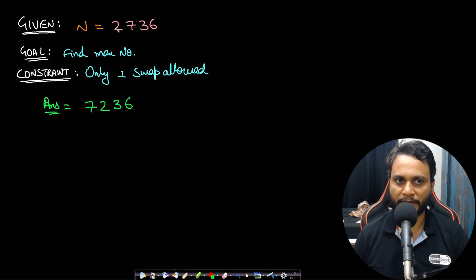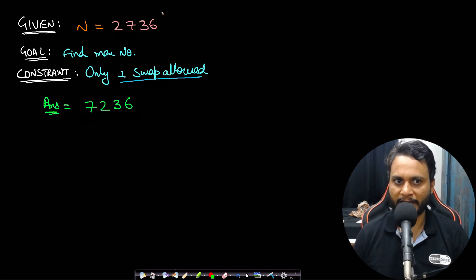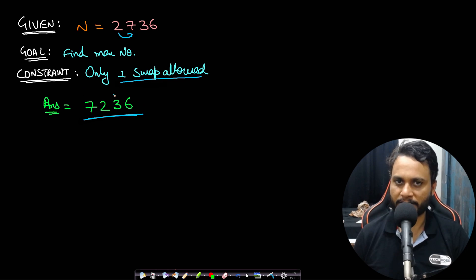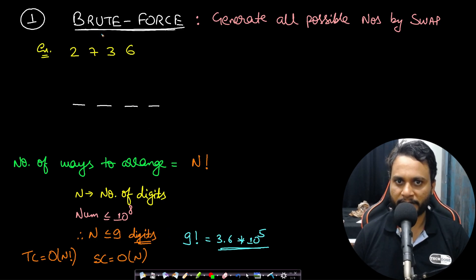Let's look at an example. Our given number is 2736 and our goal is to find the maximum number, but the constraint is that only one swap is allowed. If you swap the 2 with 7, then we form the maximum number which is 7236. Hence this is the answer. I think the understanding of the problem statement should be clear — now let's look at the naive approach.